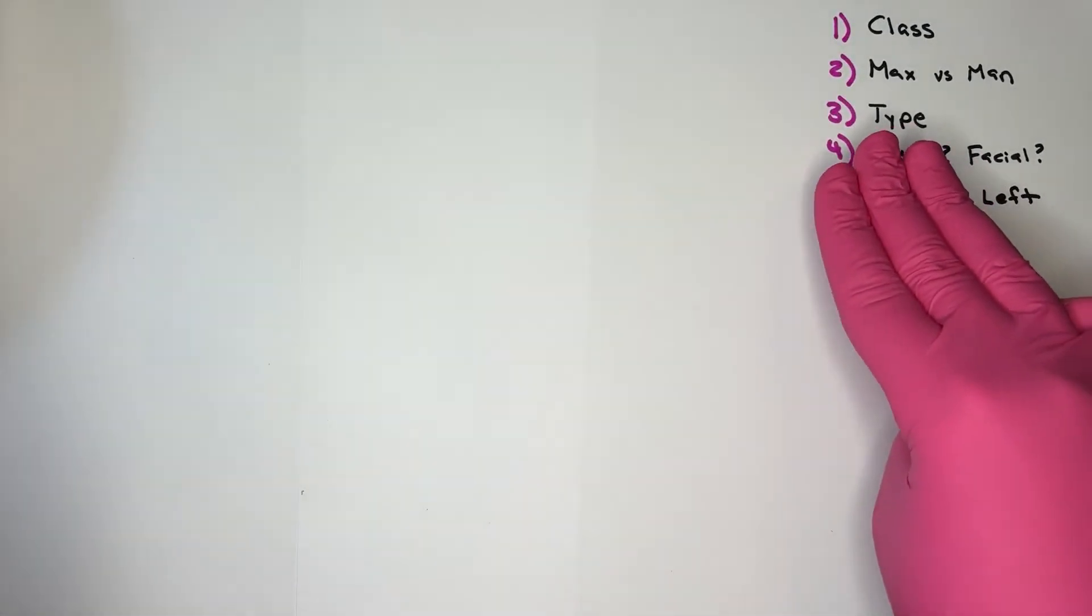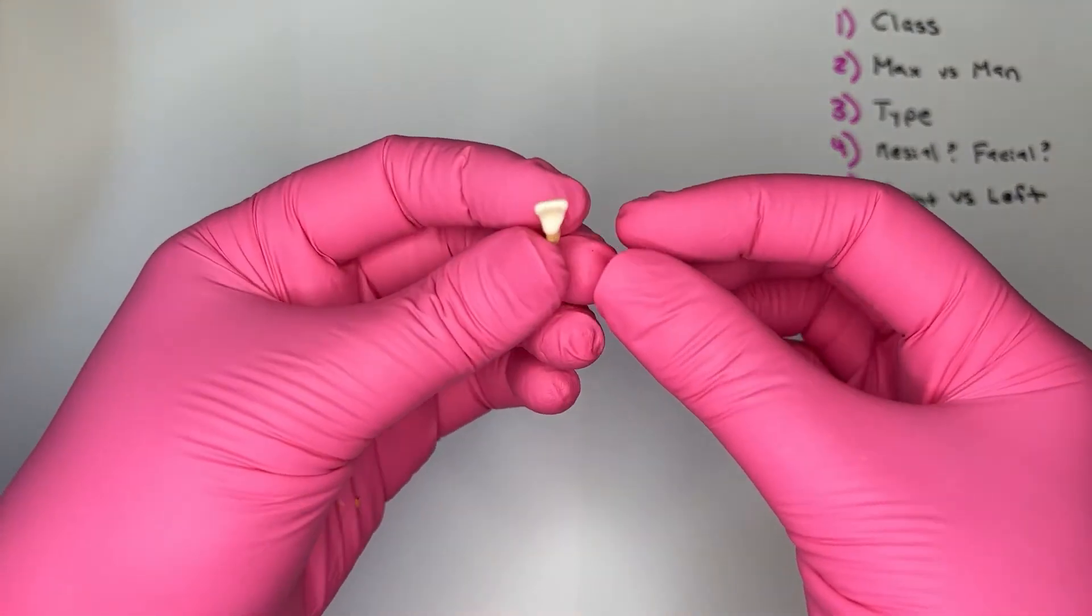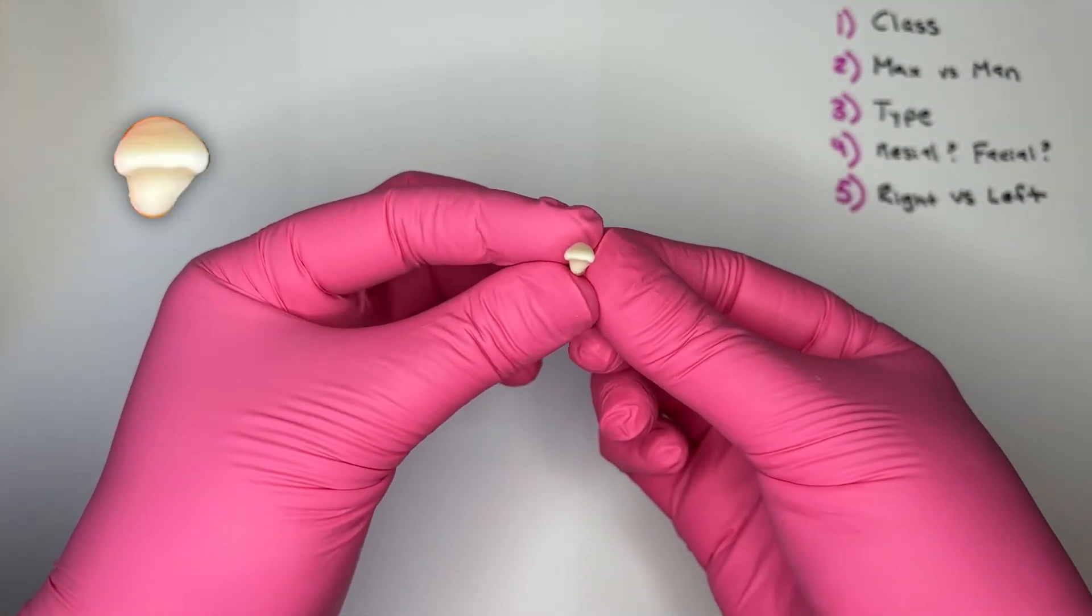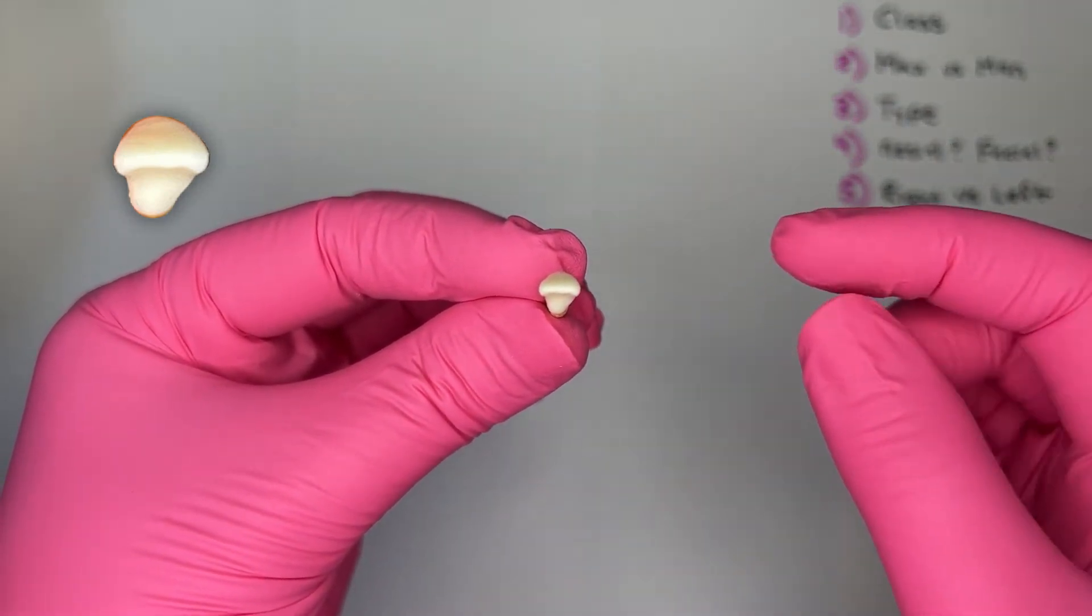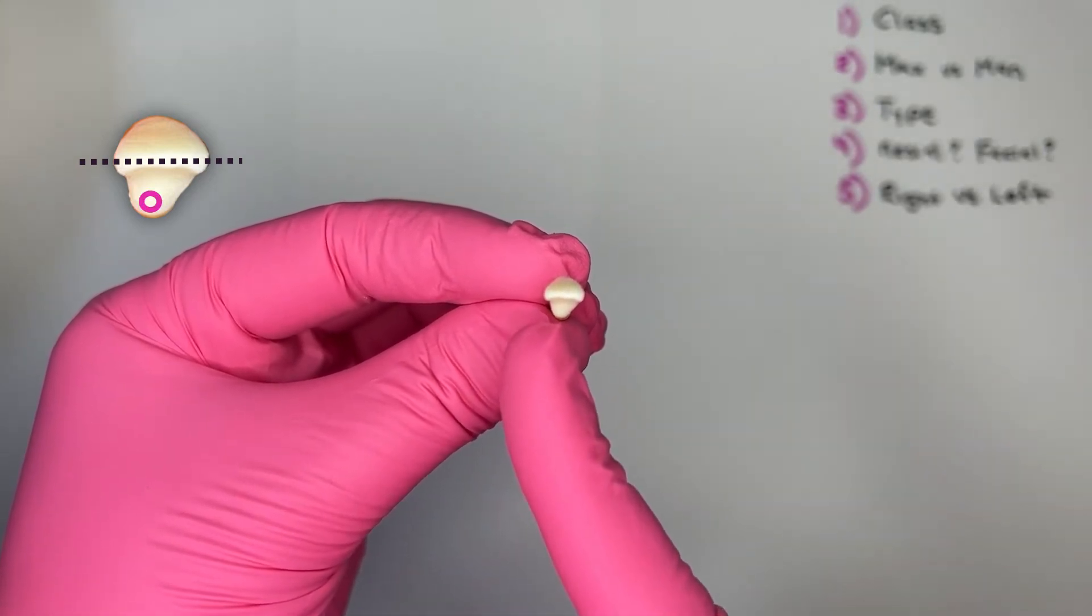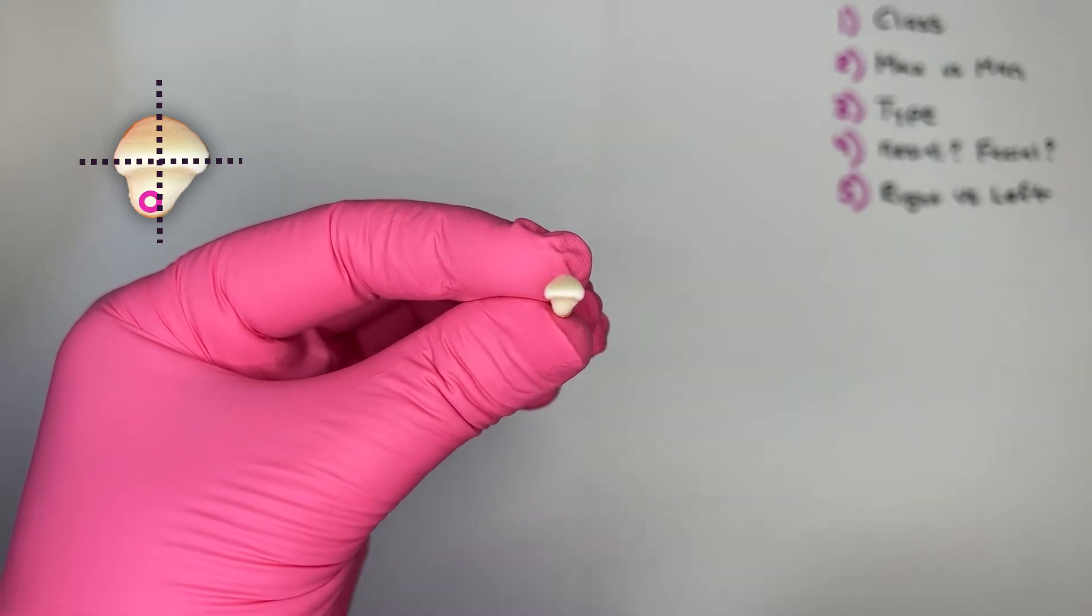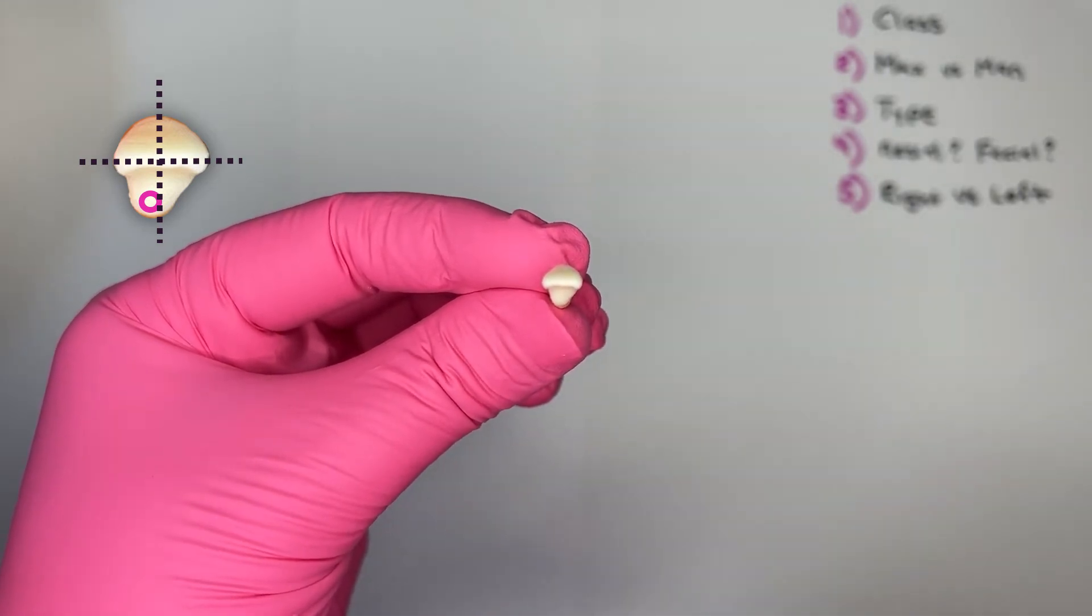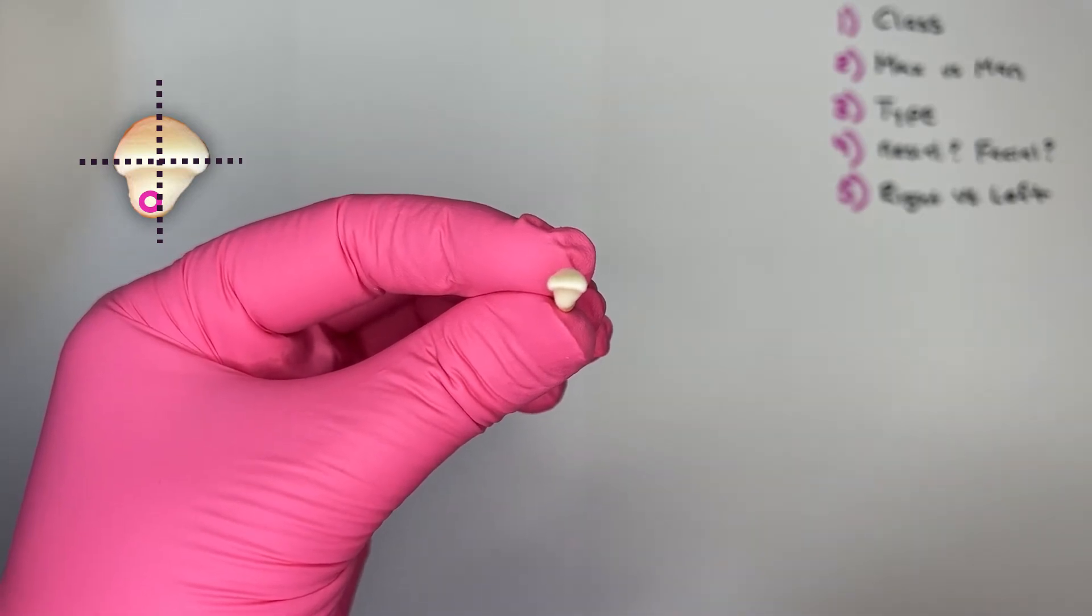Step three, what type of mandibular incisor? Central or lateral? To determine that, I look at this tooth from the occlusal. I position that incisal ridge horizontal to my eye line and I look at that cingulum. Is that cingulum centered? Nope, it's displaced to one side. A mandibular incisor with the cingulum displaced to one side is the lateral incisor.